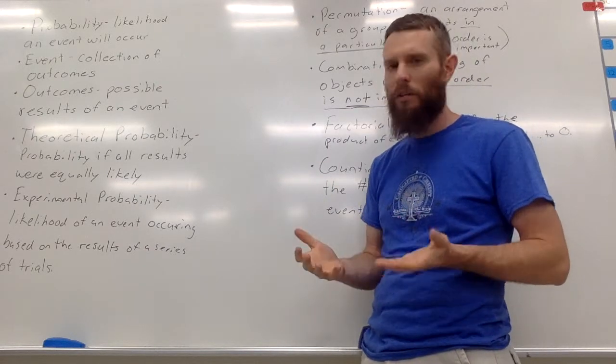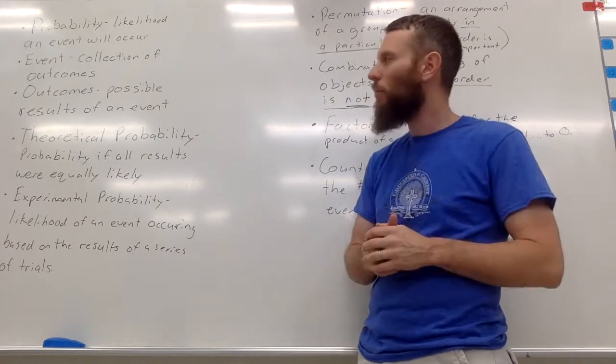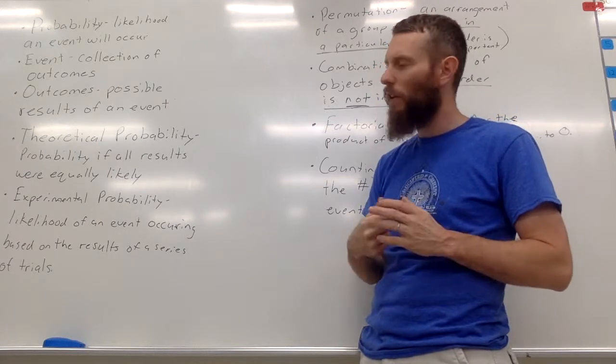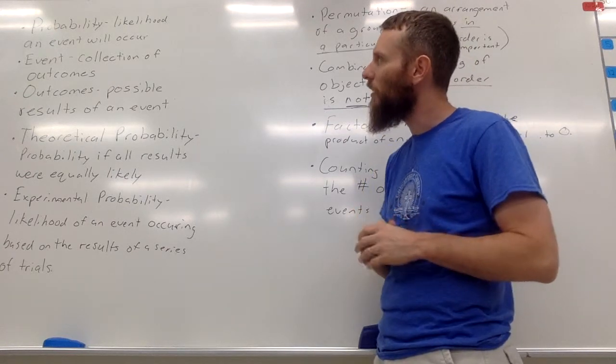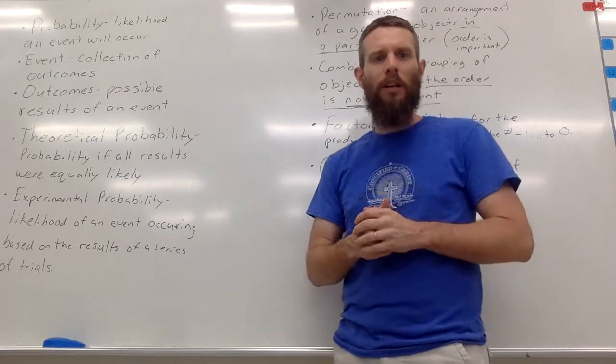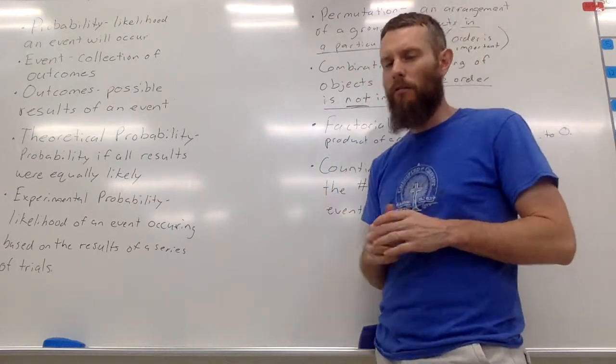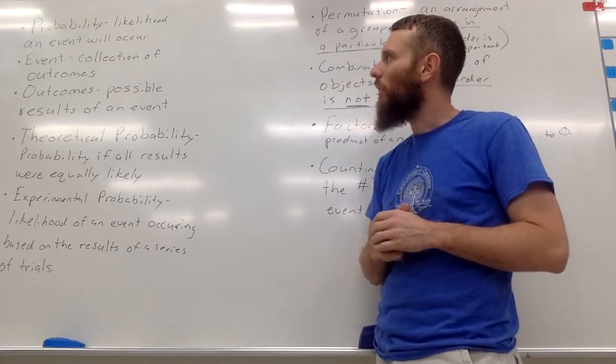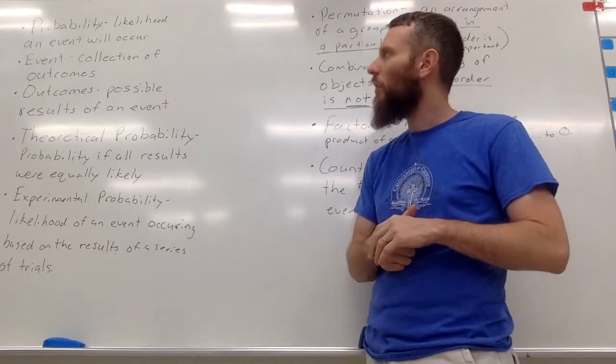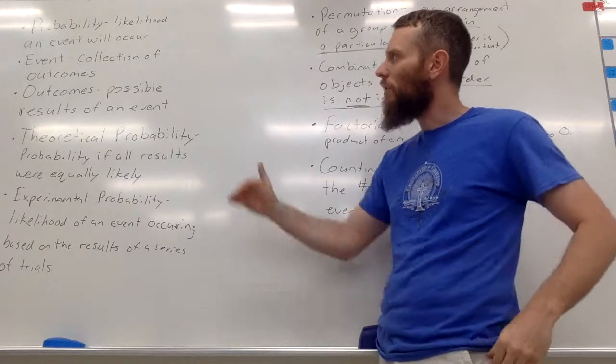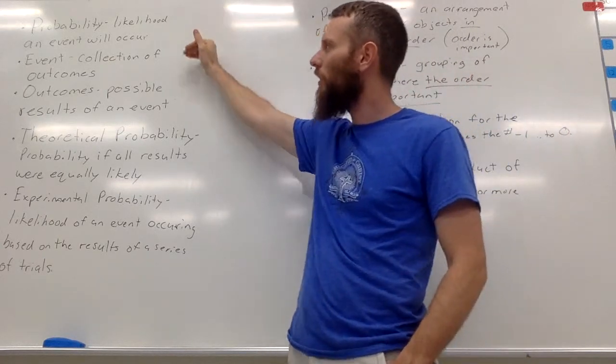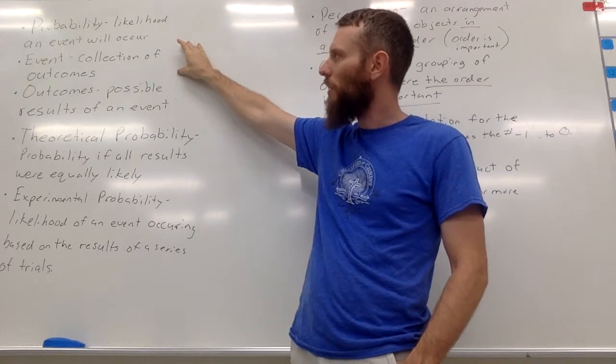Those different possibilities of what number would be facing up would be the outcomes. The event is, as I said, would be a rolling of the die. And then the probability is, what is the likelihood that that die, when I roll it, will be a two. And so the likelihood that it will be a two, I think we know, is a one out of six probability. And so these three terms, again, all kind of relate to each other. The event is actually what's happening.